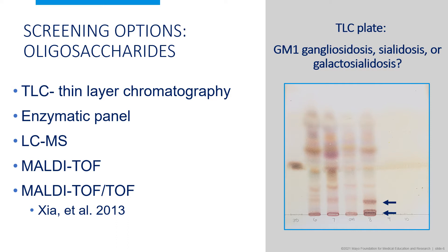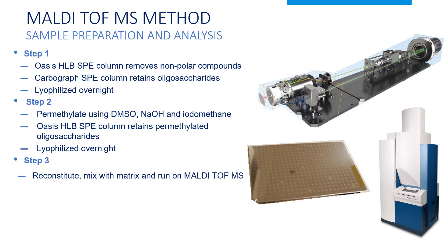Other methods have been used, but each has drawbacks and limitations, either technically or in their ability to consistently detect the complete spectrum of free oligosaccharides. In 2013, Xia and colleagues published a high-throughput method using MALDI-TOF-TOF mass spectrometry, which could identify specific urinary-free oligosaccharides and glyco-amino acids ranging from 300 to 4,000 molecular weight. Our lab modified the Xia method in three steps. The two big differences include the choice of solid phase extraction columns that use less volume and the replacement of the chloroform extraction step with acetic acid neutralization, speeding up the sample prep.